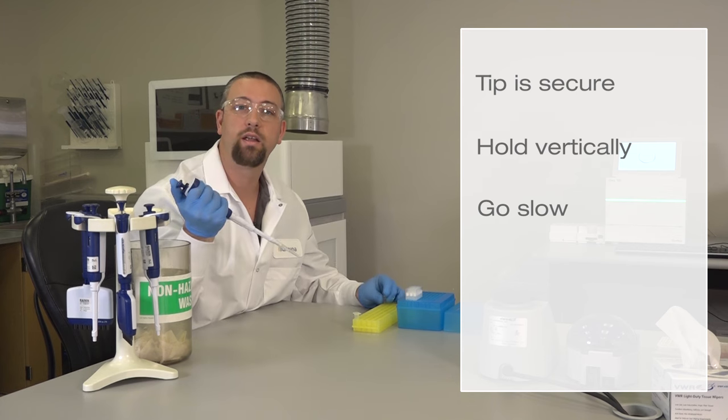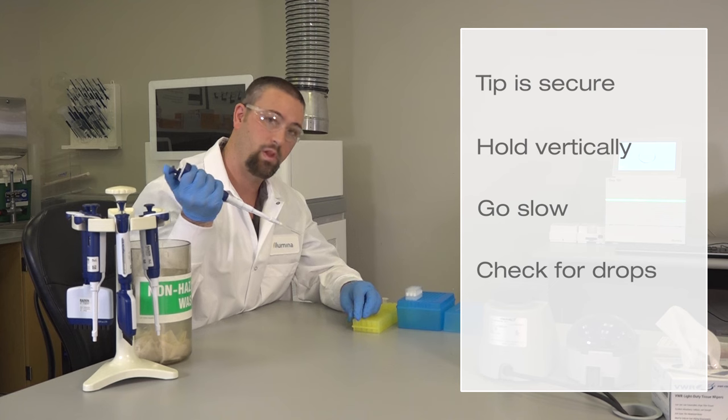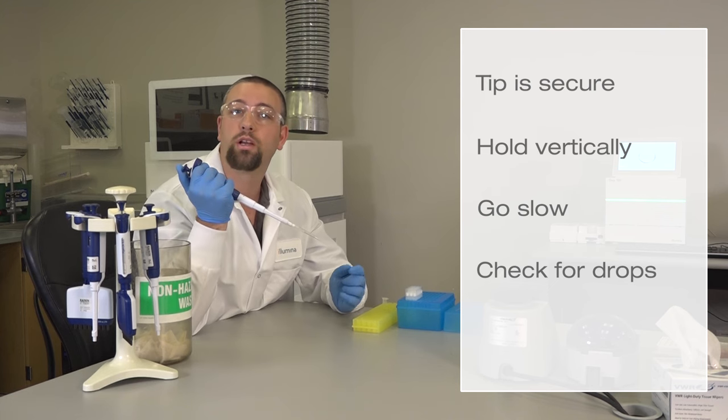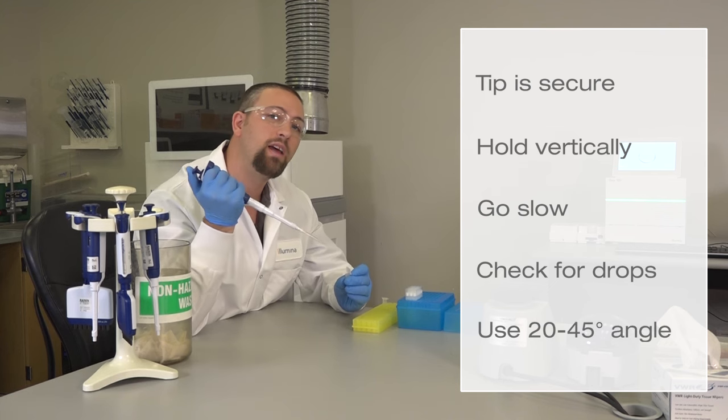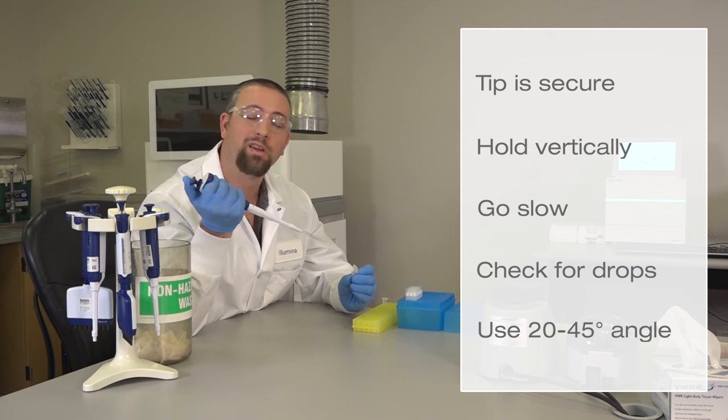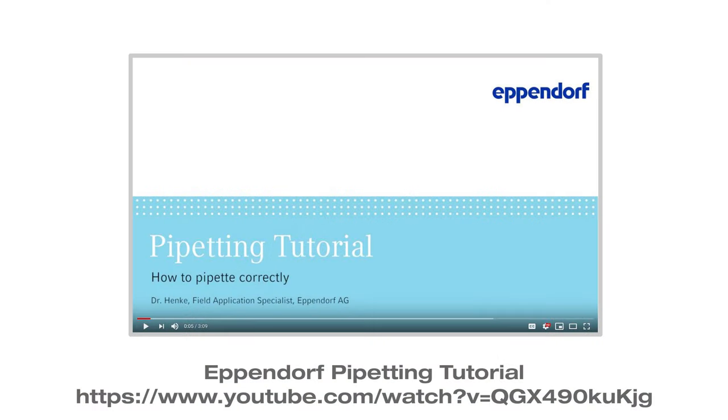Check the outside of the tip for unexpected drops of liquid. And hold the pipetter at a 20 to 45 degree angle to achieve the optimal flow of liquid out of the tip and avoid splashing. Here is an online video for more on proper pipetting.